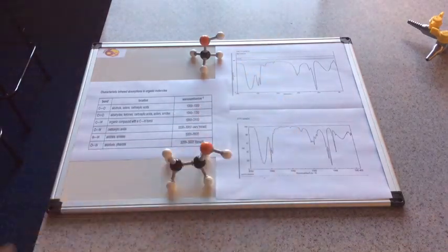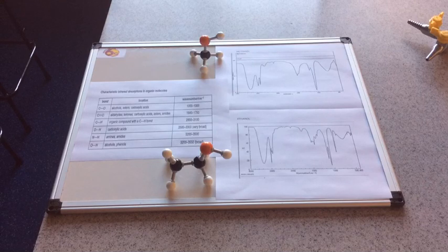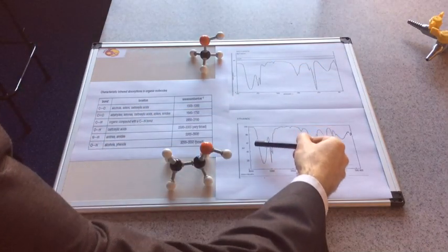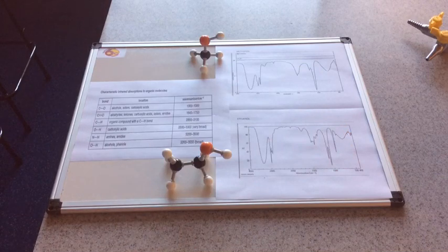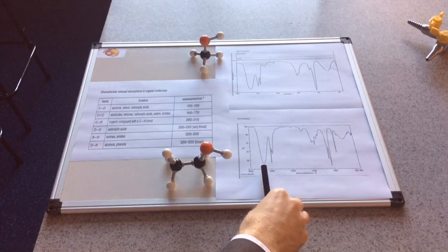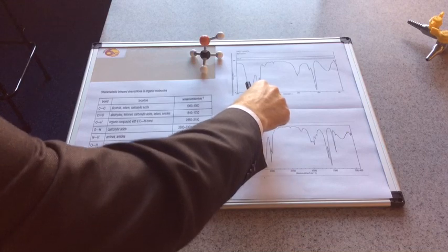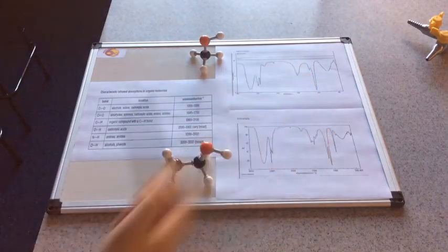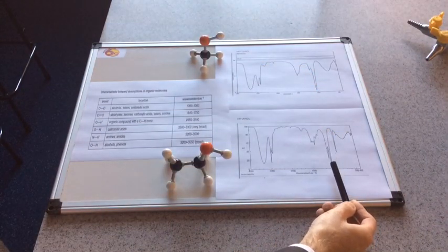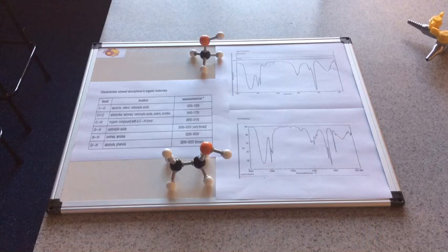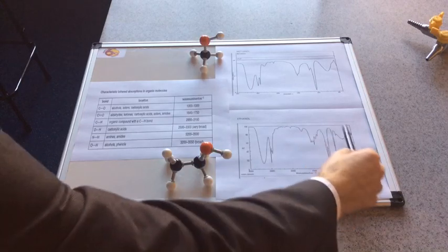If you have a look at the spectra you can see a lot of similarities. We've got the classic OH absorption - one thing I didn't mention before is this is typically a broad absorption, so it's quite wide. So you can see straight away from looking at that, there's an OH bond in this molecule. There's your CH absorptions, and the other absorption I focused on with methanol was this one here.